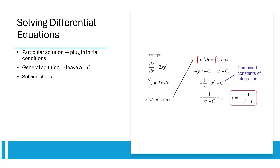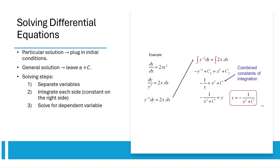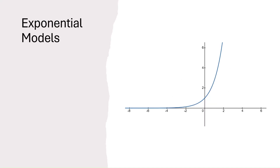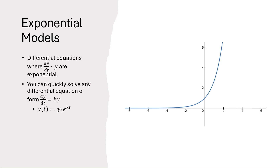There are four steps to solving differential equations. First, you separate the variables, usually dy and dx or dy and dt. Then you integrate each side — you only need to add the constant of integration on the right side. After that, you solve for the dependent variable. And then, if the question asks for a particular solution, you plug in your initial conditions to solve for that constant. Whenever you see a differential equation in the form dy/dt is proportional to y, it's going to be exponential. Specifically, if dy/dt equals ky, then y of t is going to be y₀ times e to the kt.